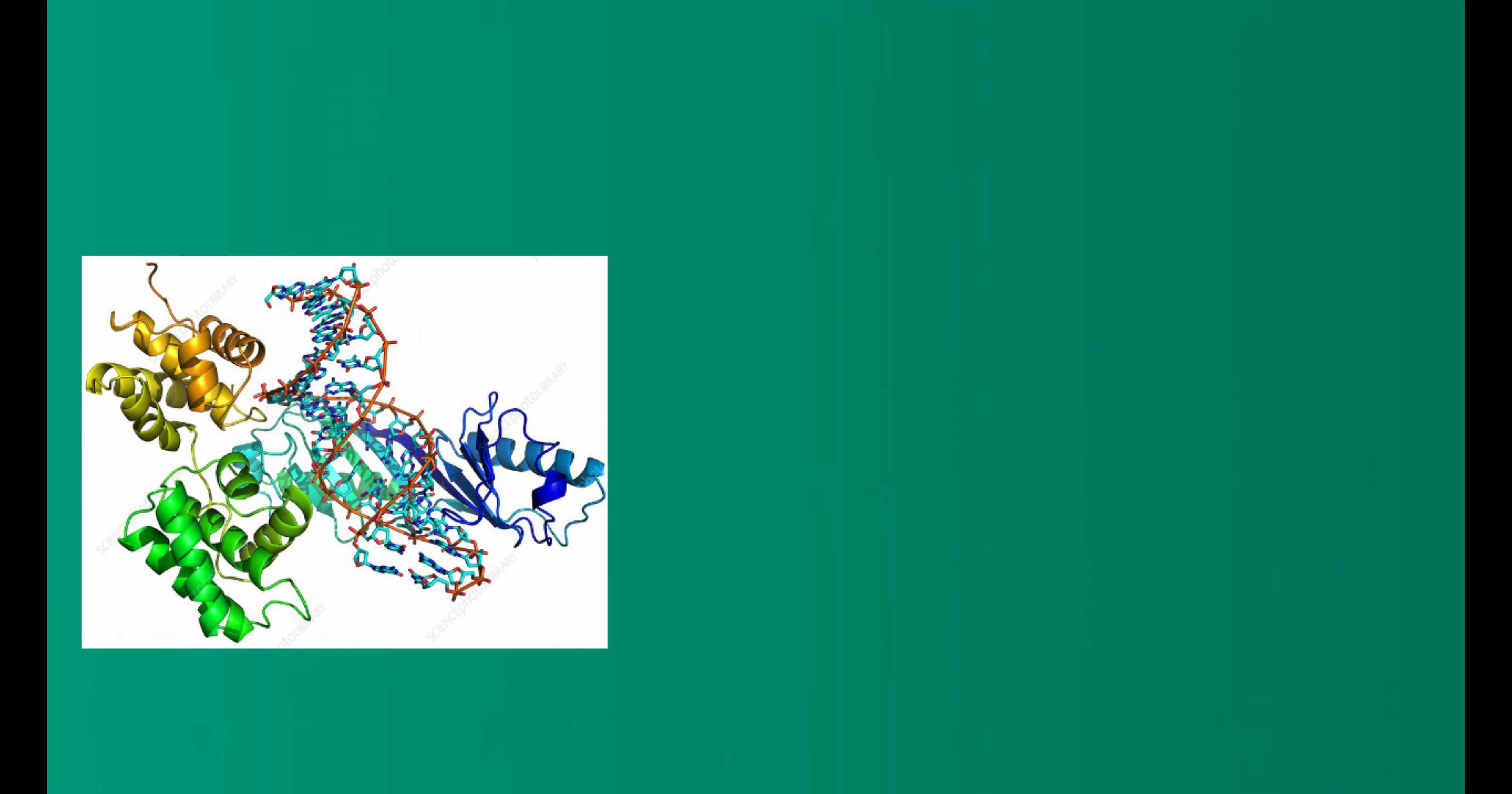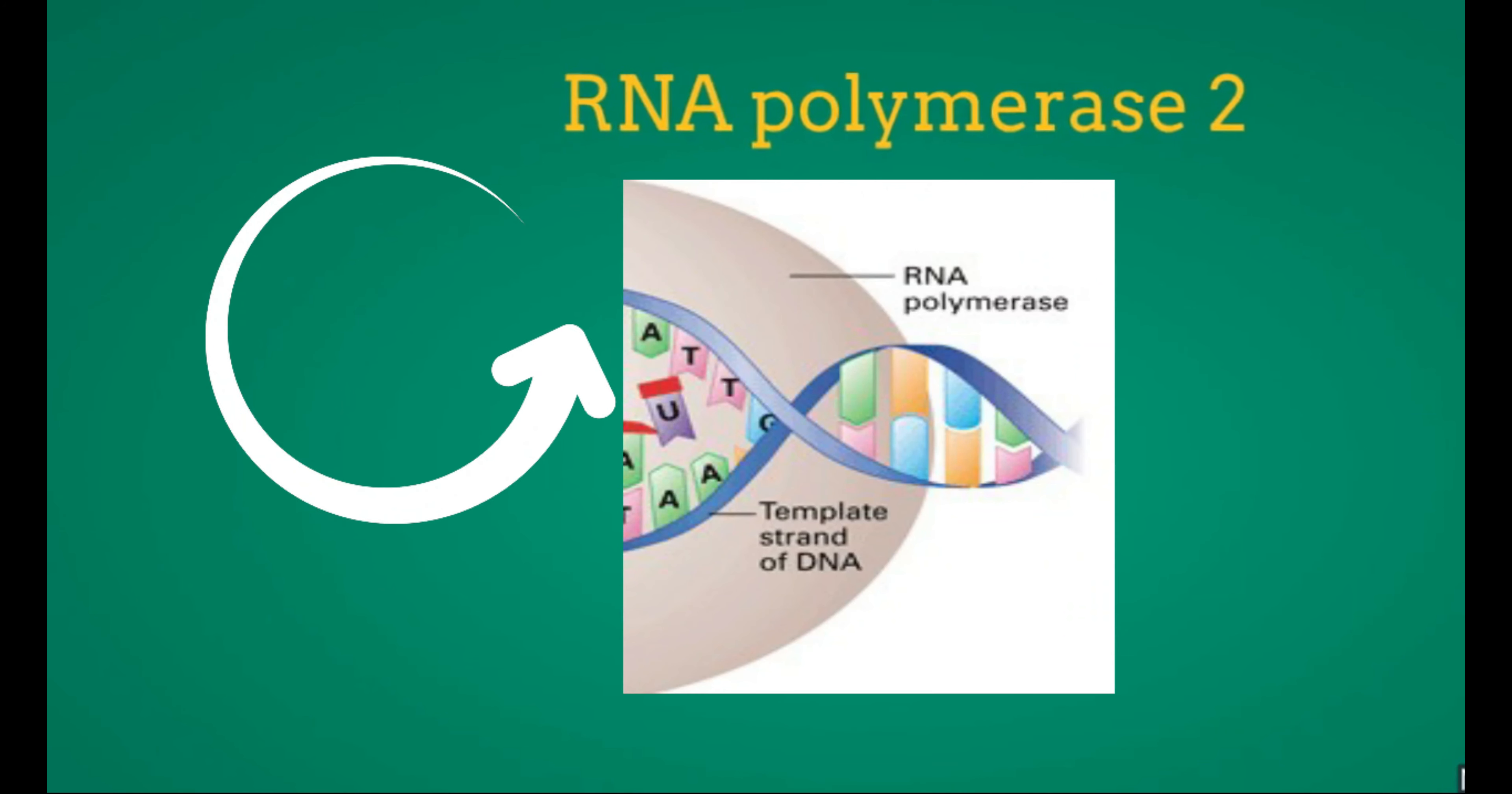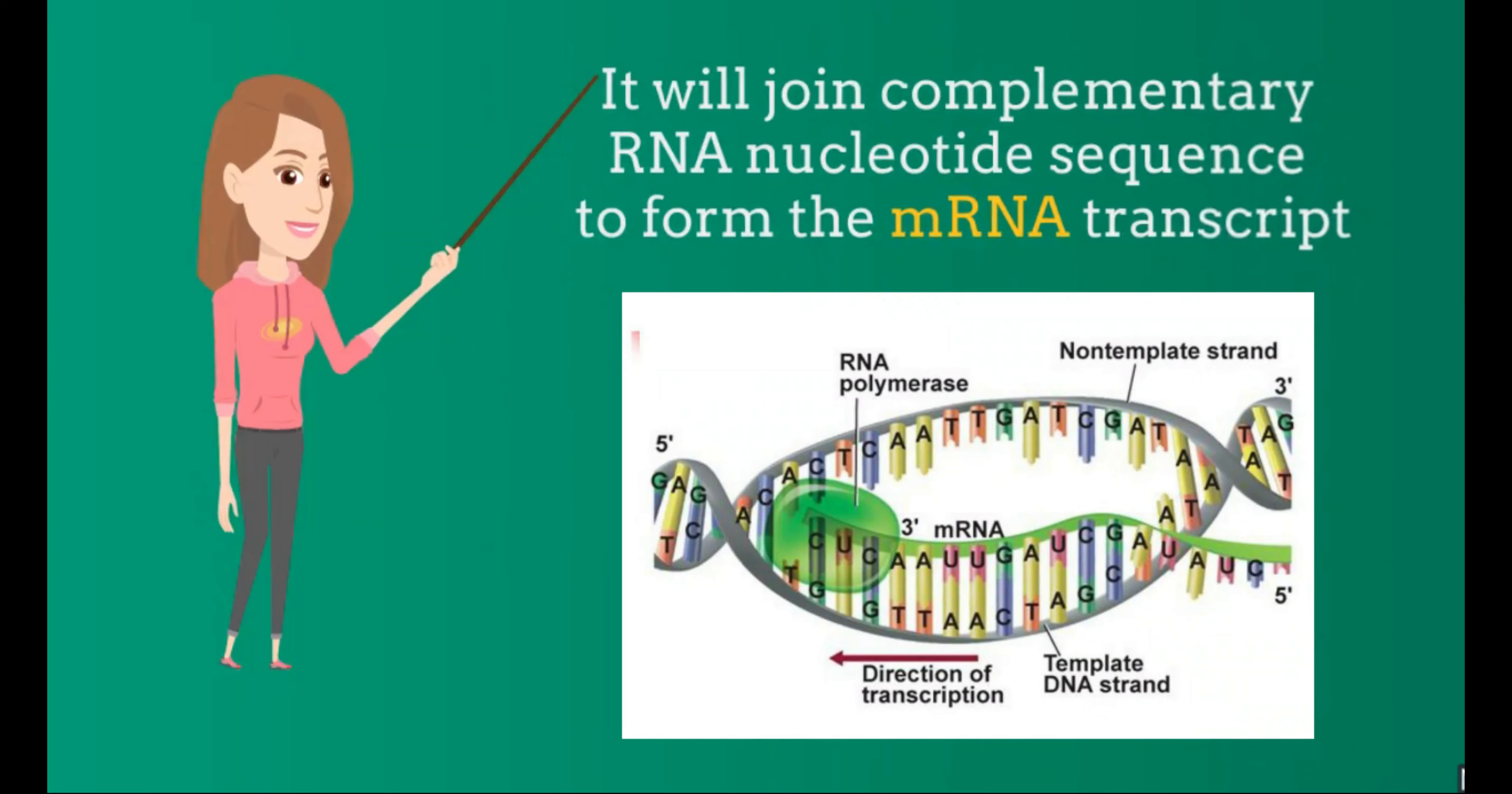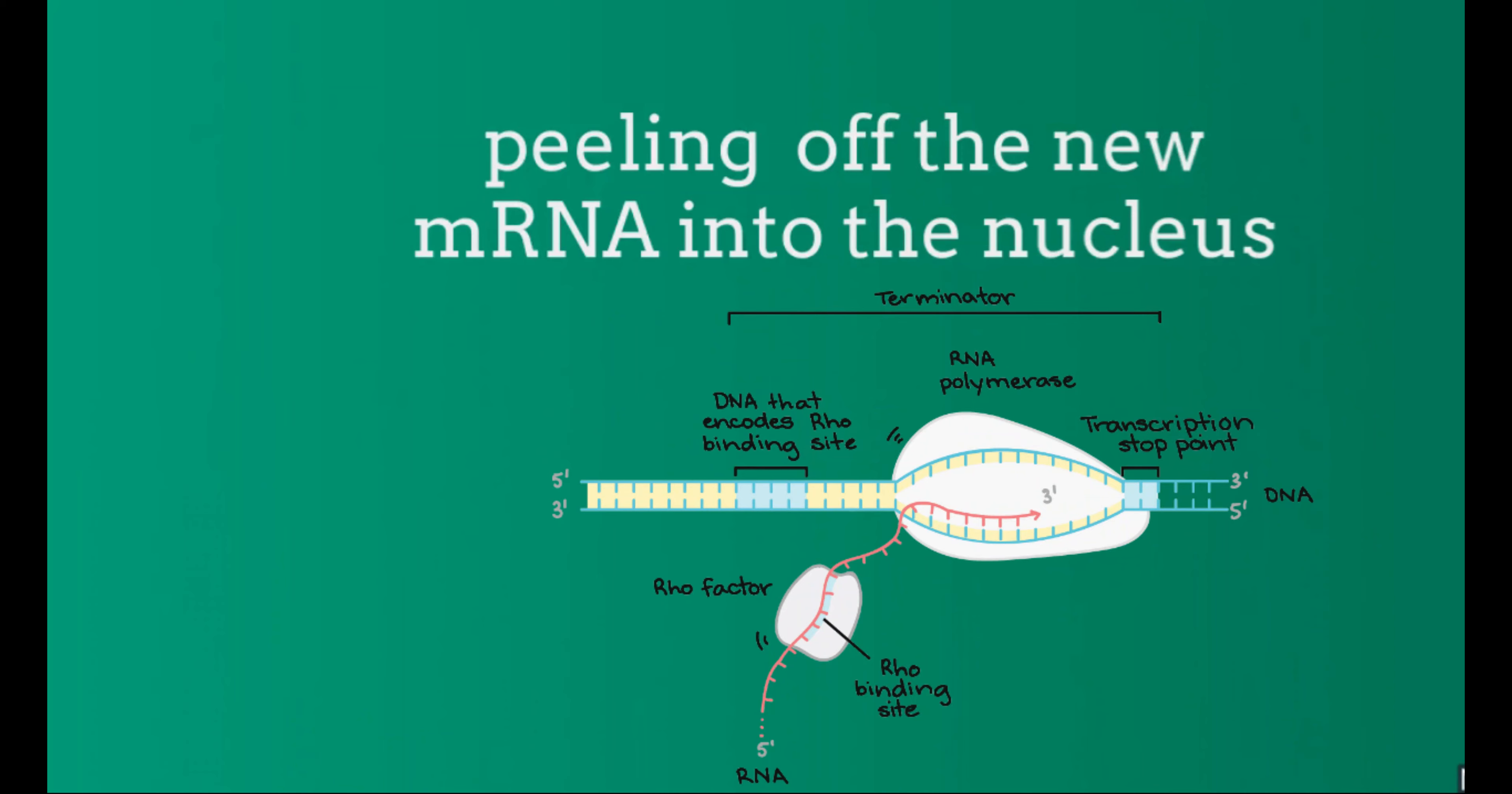Transcription begins with the assembly of the transcription initiation complex at the promoter of the gene to be expressed. Then, RNA polymerase 2 moves along the DNA molecule, unwinding it to read. Next, it joins complementary RNA nucleotides to form the mRNA transcript. Finally, transcription is terminated with the stop signal, releasing the new mRNA into the nucleus.